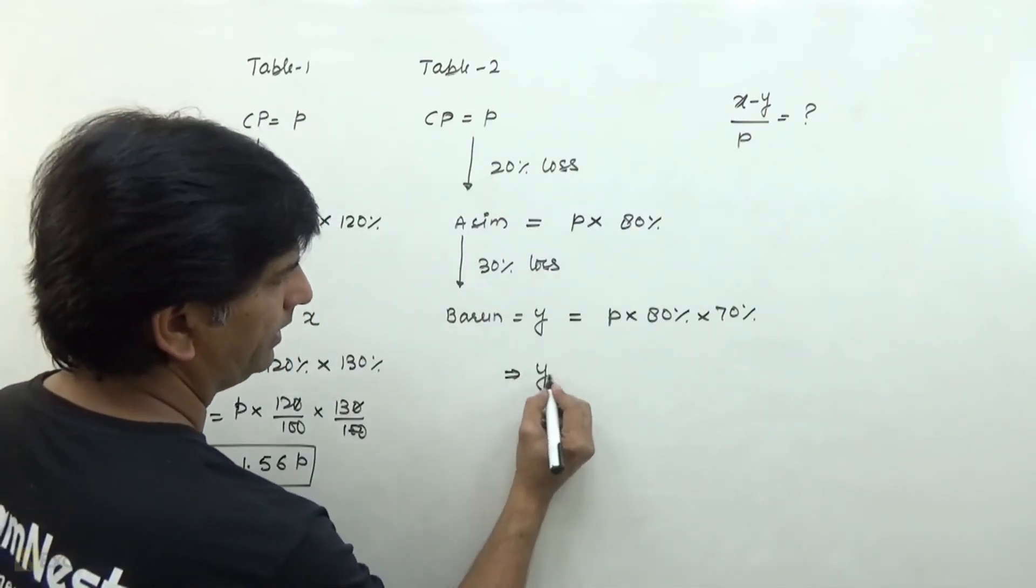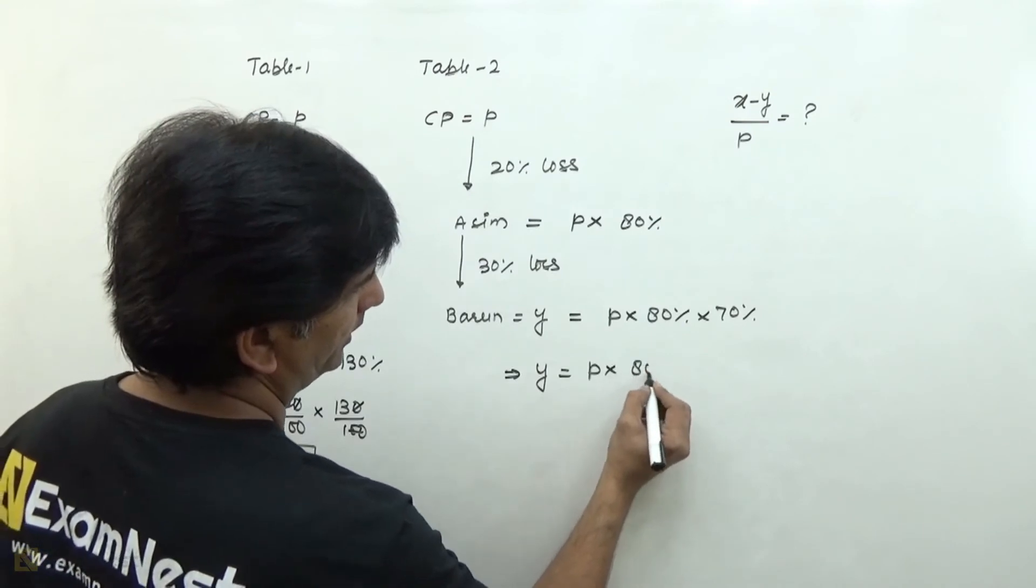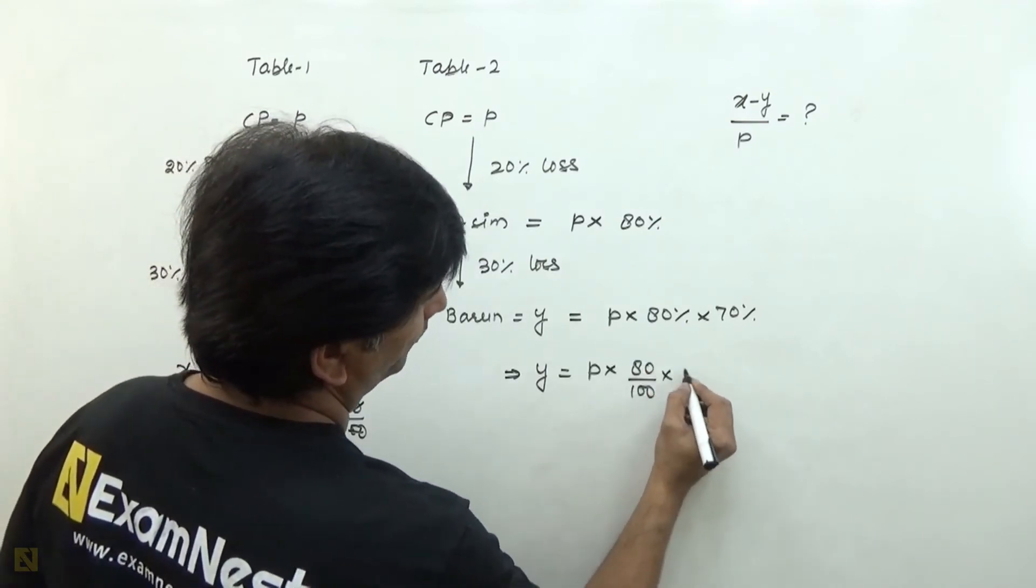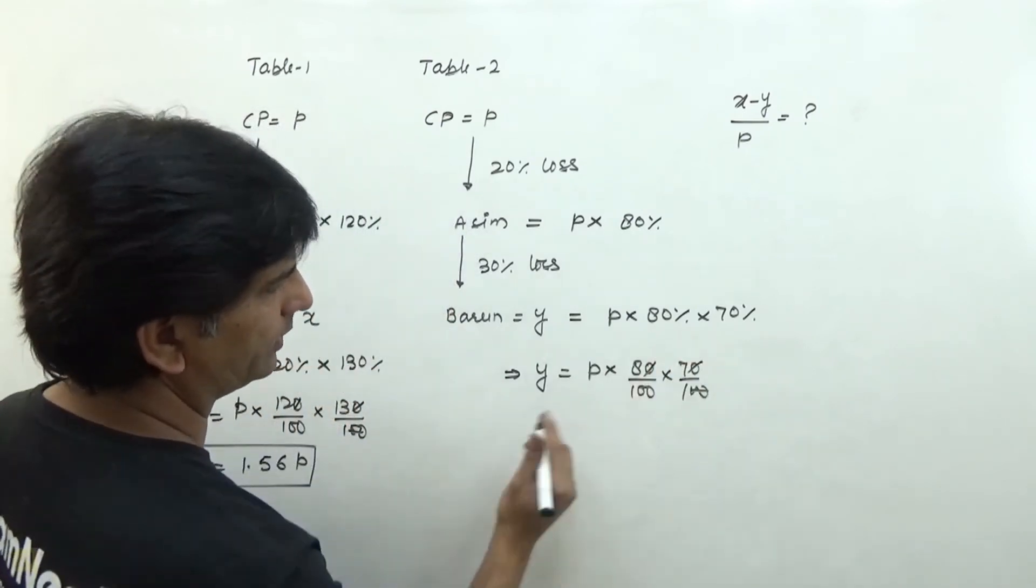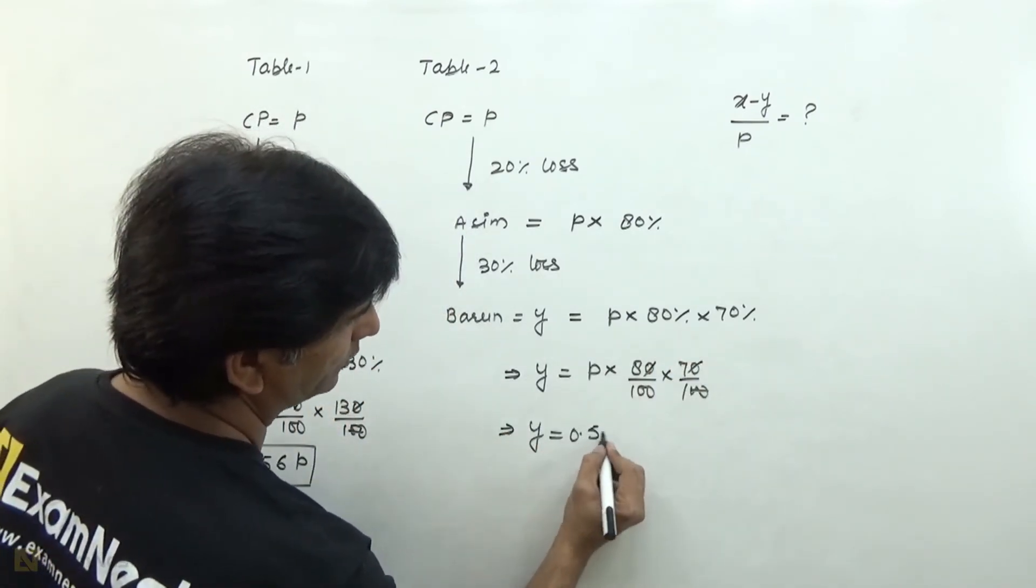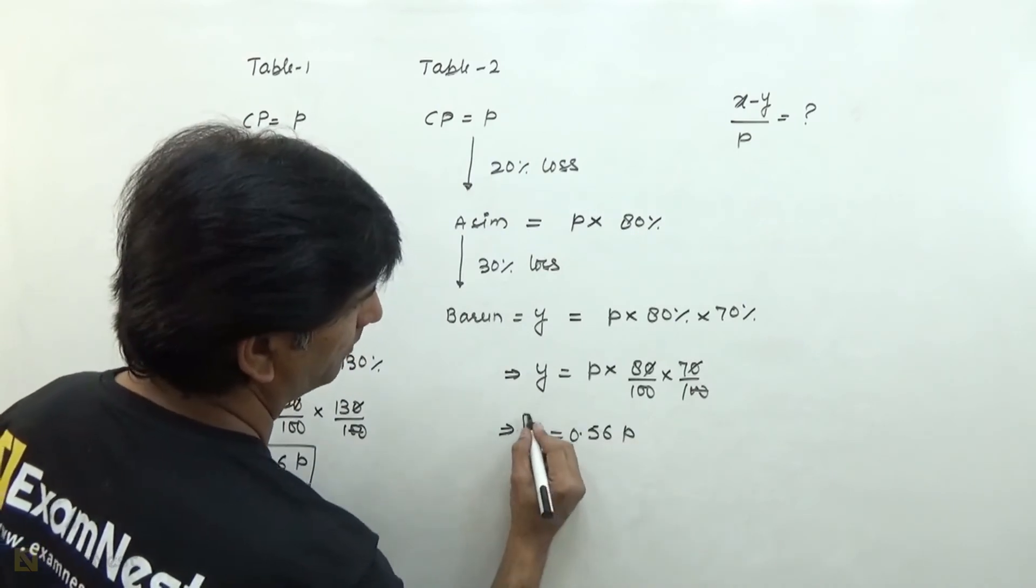So y equals P into 80 over 100 into 70 over 100. Again, we can cancel two zeros. If we calculate P into 56 over 100, we get 0.56 times P.